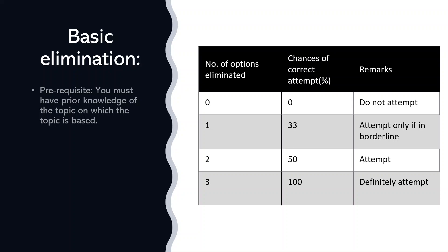There is a lot of debate around elimination techniques, or what they call educated guessing, but it is simply probability-based reasoning that lets you attempt a question even if you don't know the exact answer. The prerequisite is that you must have some knowledge about the subject matter. Let's understand it through a simple table. If you have no clue about any of the options, the chances of getting it right are close to zero — in this case, avoid attempting that question entirely. Don't rely on random guessing; it will only give you negative marks.